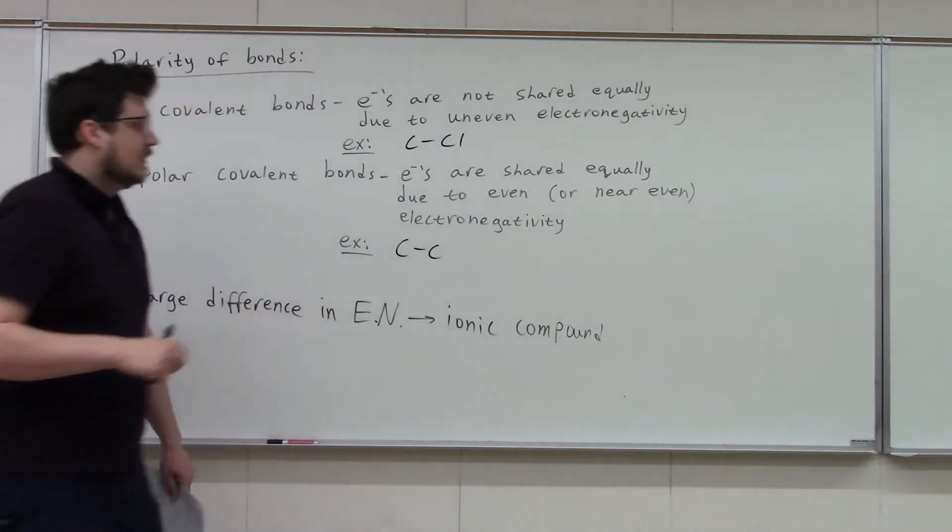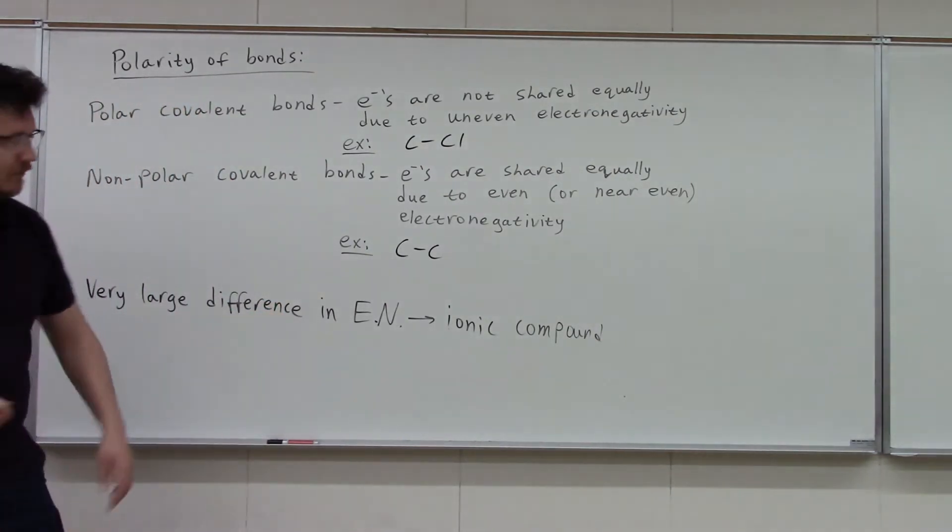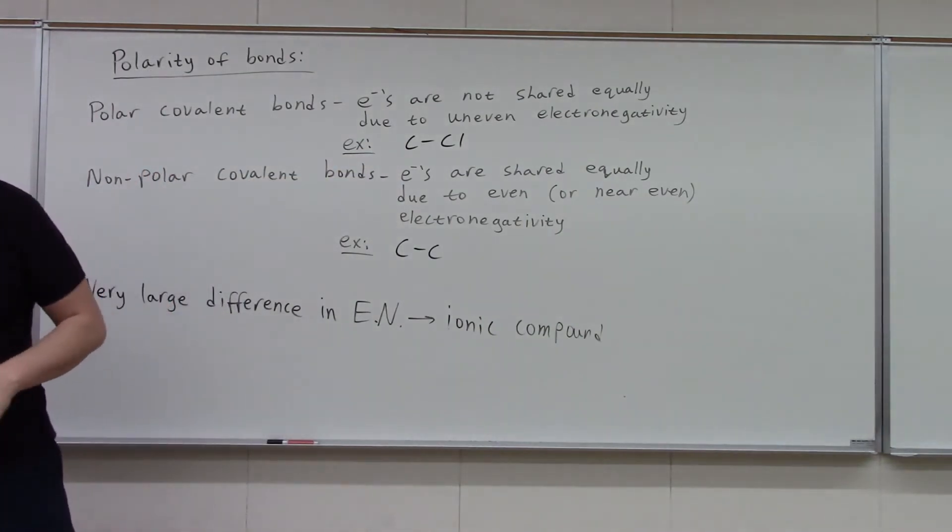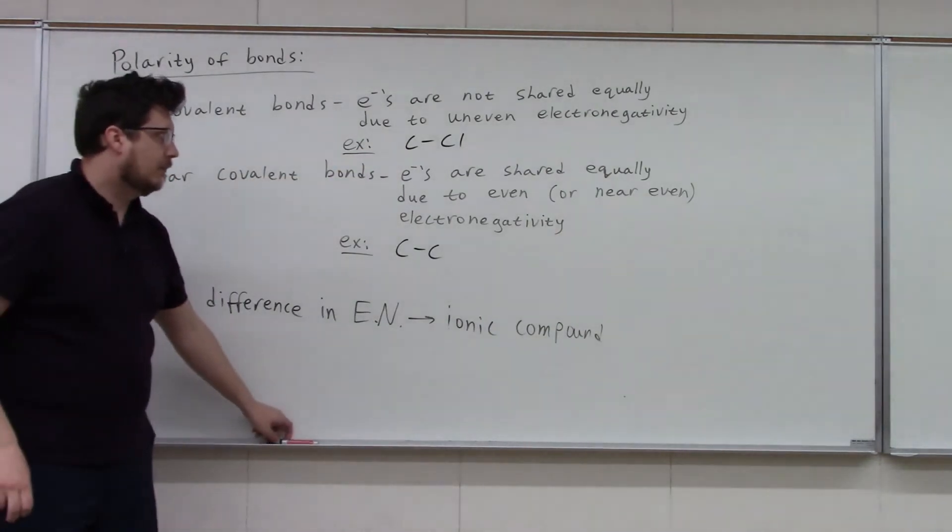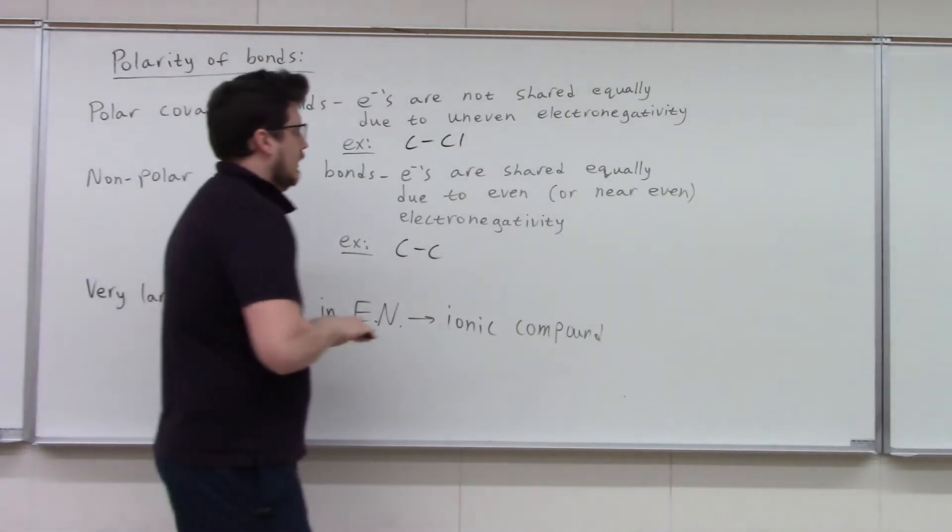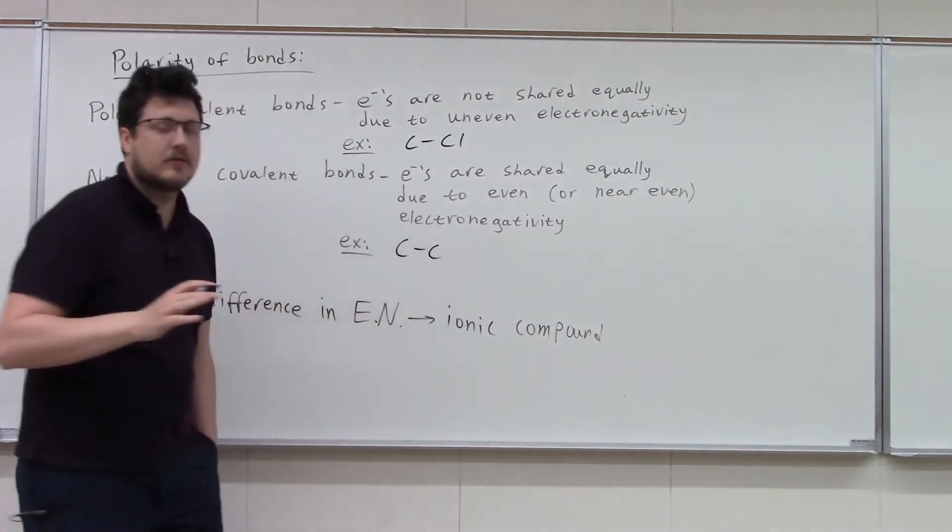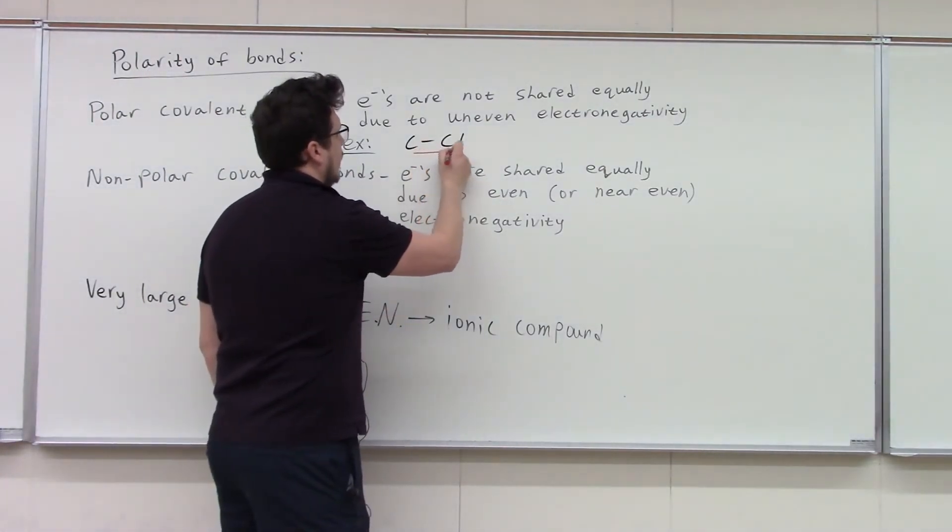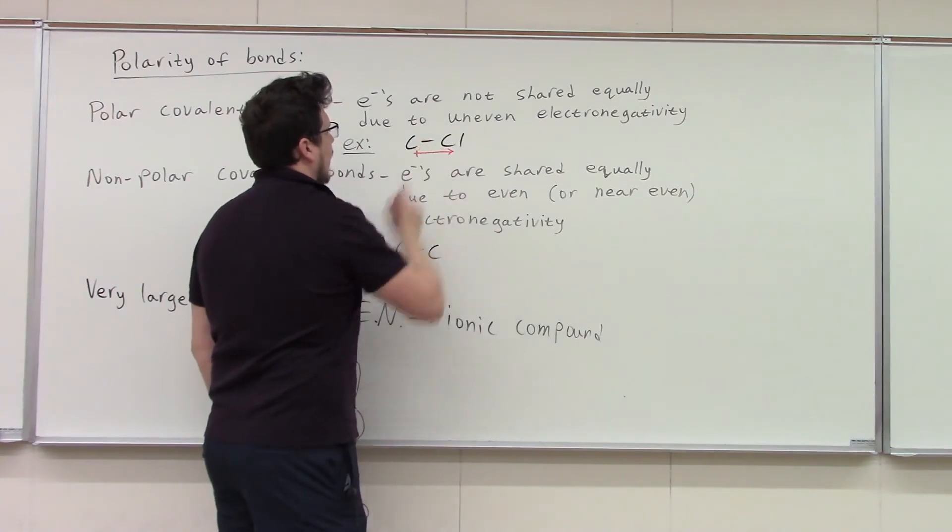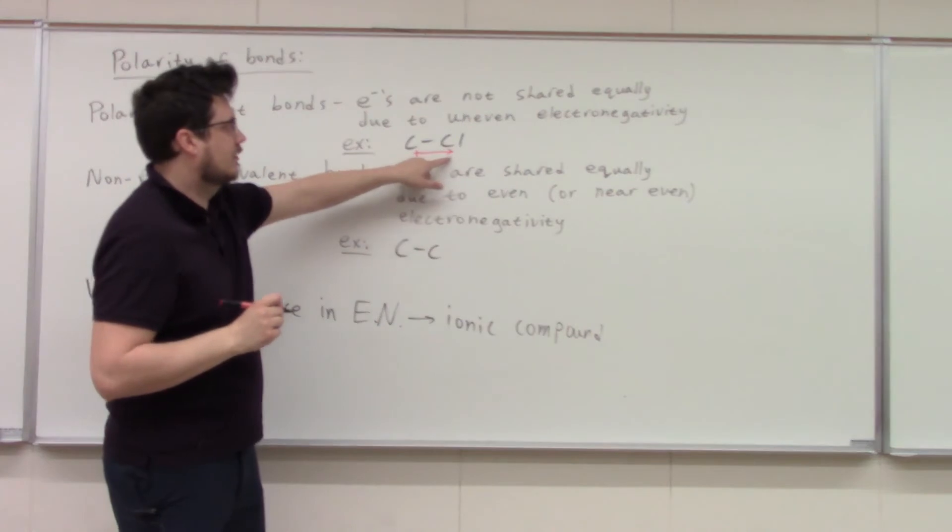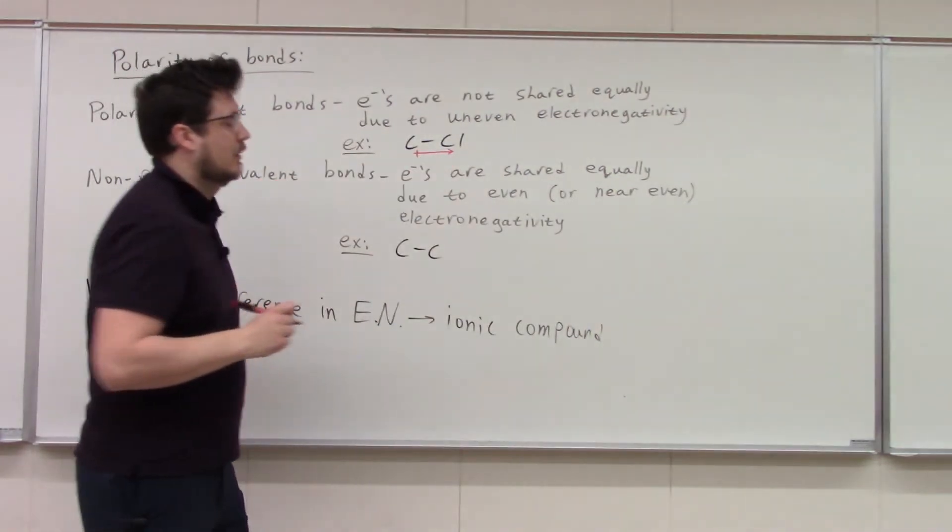And then the last thing to talk about is when we have these polar bonds, we can label them. And so we can label what we call a dipole. And so there's two ways of doing this. The first is with an arrow and it will point to the more electronegative element with a little positive side on the tail. And so this is saying this is a little bit positive and the electrons are shading towards the chlorine. That's the first option.